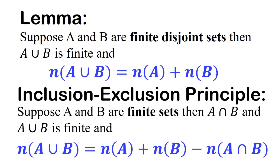Remember in the classroom I called your attention to this lemma, and I said this lemma holds if and only if the two sets are finite disjoint sets — meaning they have no intersection. So the number of A union B here is the number of elements in A union B such that X belongs to A or B. For this case, if we are talking about finite disjoint sets, the lemma holds — I proved it to you in the classroom.